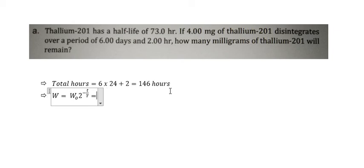We have an original weight of 4, so we put 4, then multiply by 2 power minus t. T is 146 divided by 73, which gives us 4 multiplied by 2 power minus 2.